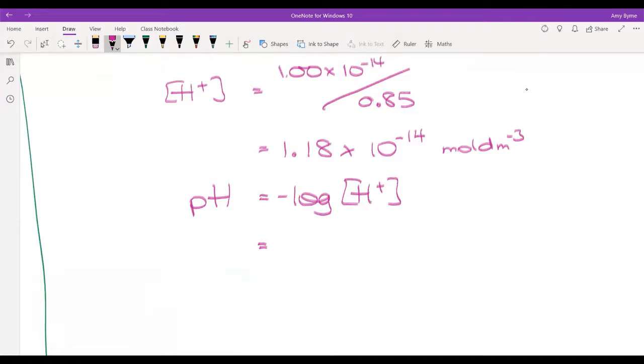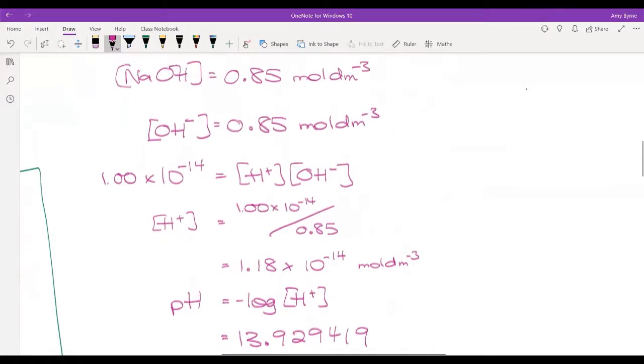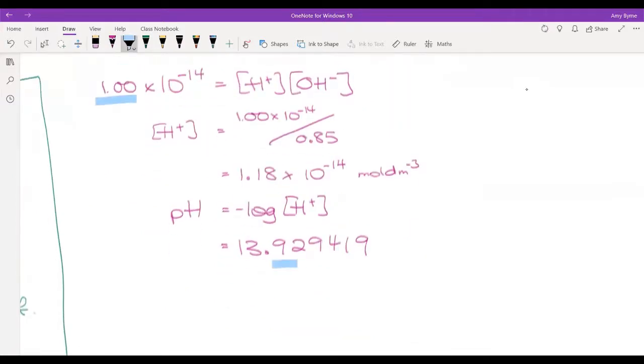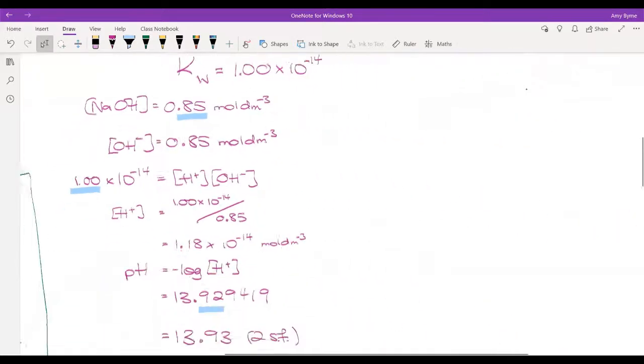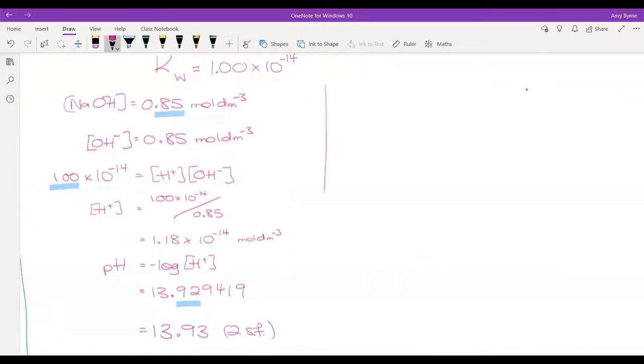Now I've got my concentration of H plus, I can work out pH. So pH is neg log H plus. That gives me a pH of 13.929419. Let's double check our sig figs. I have two sig figs here and three sig figs here, which means that my answer has to be to two sig figs. Remember, these numbers before the decimal point do not count as significant when we're talking about pHs. So this would be a pH of 13.93. Does this number make sense? Bases are between 7.1 and 14. And this is a concentrated solution of a strong base.